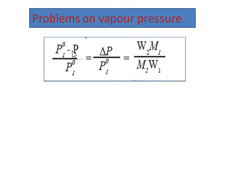The formula is: (P₀ − P) / P₀ = (W₂ × M₁) / (M₂ × W₁). Here P₀ is the vapor pressure of the solvent, P is the vapor pressure of the solution. The difference (P₀ − P) is delta P, known as lowering of vapor pressure. So delta P / P₀ = W₂·M₁ / (M₂·W₁).